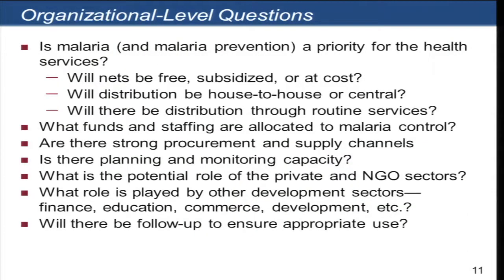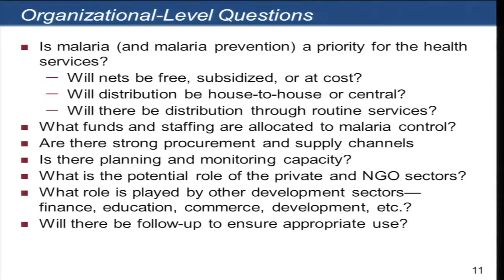Some organizational or institutional level questions: the community may want the net, but the health system may have difficulty getting enough nets to the right place at the right time. We're sometimes forgetting the role of the private sector in providing nets either at cost or subsidized. We need to look at how these different institutions can be appropriately involved, being aware that there are these other levels that impinge on the ability of the community to solve its health-related problems.